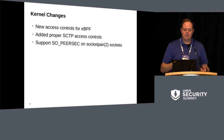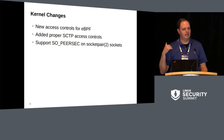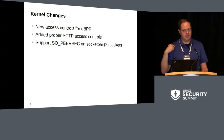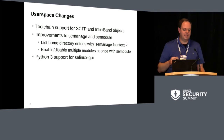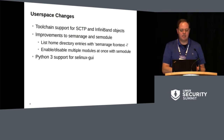We also added SOPeerSec support for sockets created with the socketpair system call. SOPeerSec is the socket option used by GetPeerCon so that you can see the SELinux label on the other end of the socket connection. As far as user space goes, we added toolchain support for SCTP and InfiniBand objects — InfiniBand we actually added last year, we were just a little slow to get the upstream user space support, but that's in there now.